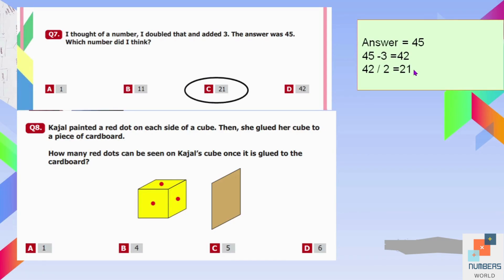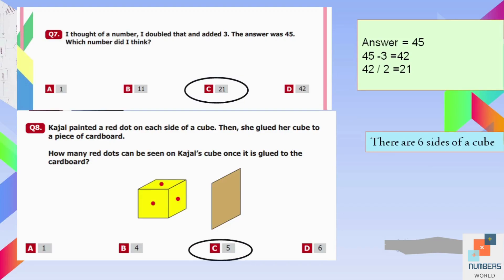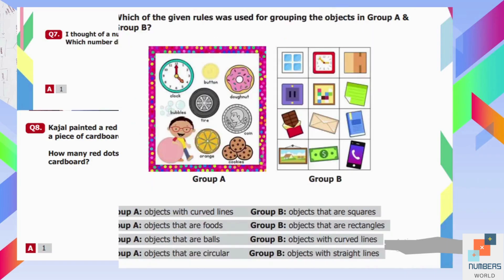Question number eight: Kajal painted a red dot on each side of a cube, then glued the cube to a piece of cardboard. How many red dots can be seen? A cube has six sides. Since one side is glued to the cardboard, five sides and five dots remain visible. Five is the answer.